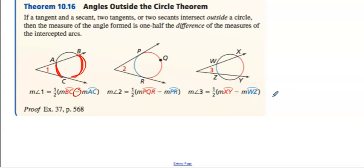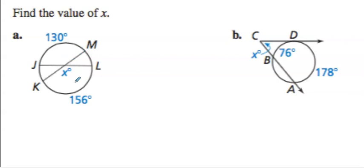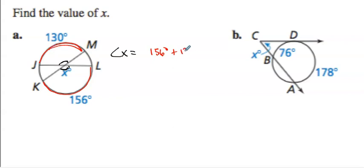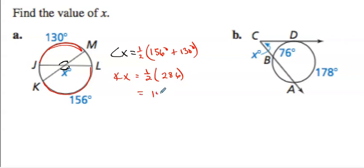Let's look at this example. We've got angle x, which is an interior angle. Angle x equals arc KL — which is 156 degrees — plus arc JM — which is 130 degrees — all divided by two. So angle x equals one half times 286, which is 143 degrees.